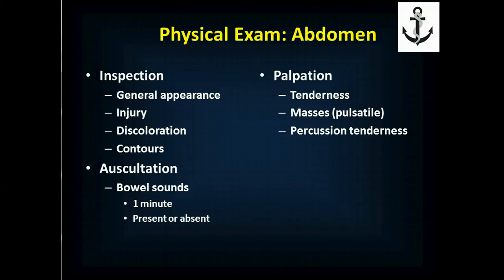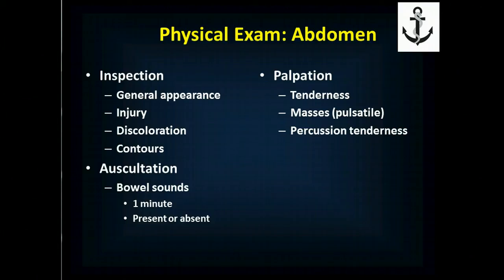Because palpation can stimulate the bowel, we auscultate second for the abdomen. We inspect, then auscultate, listening for bowel sounds. Listen for up to one minute and describe them as either present or absent. You're most likely to hear good bowel sounds in the mid-epigastrum to belly button area or just to the right of that. Listen in all four quadrants where possible, but that central area is the key location; listen there for a full minute.